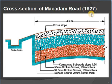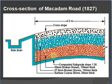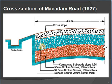This is the cross-section of Macadam road, invented in 1827. Starting from the bottom: compacted subgrade with slope 1:36; next, 50 mm broken stones, 100 mm thickness; then 37.5 mm broken stones, 100 mm thick; and finally the surface layer of 20 mm stones, 50 mm thick. There are four layers total used in the Macadam road construction of 1827.